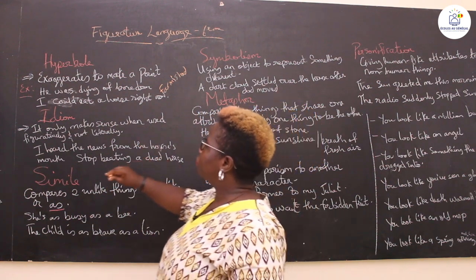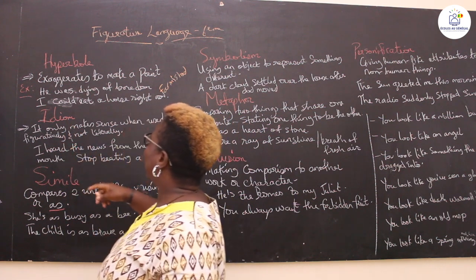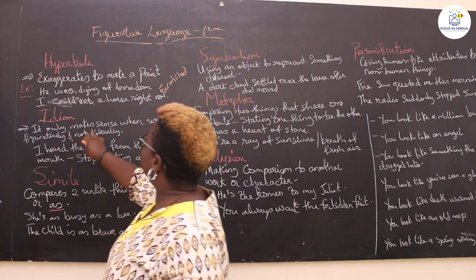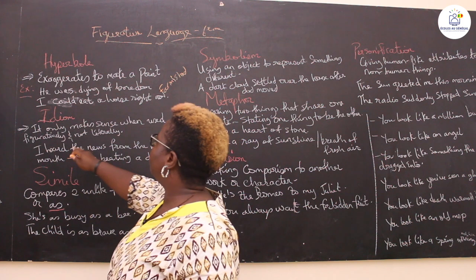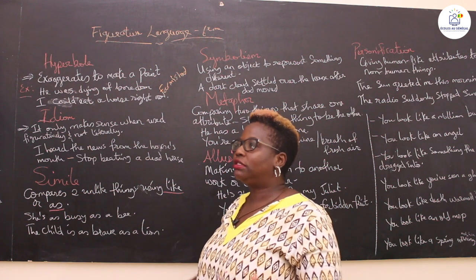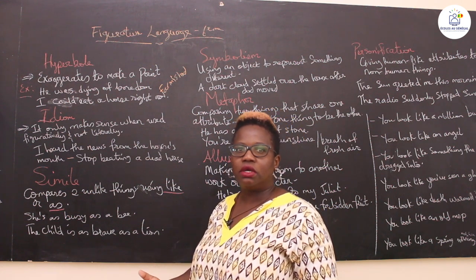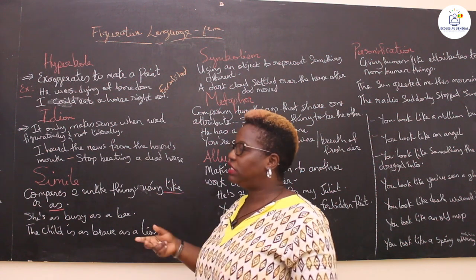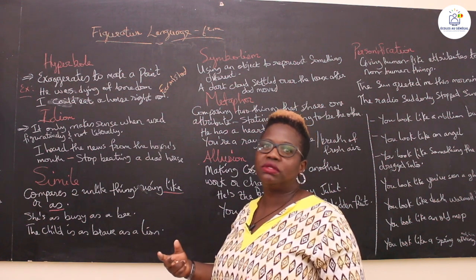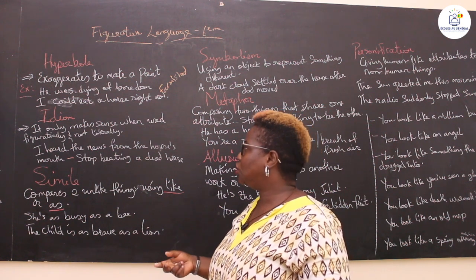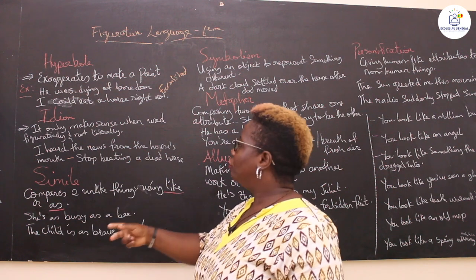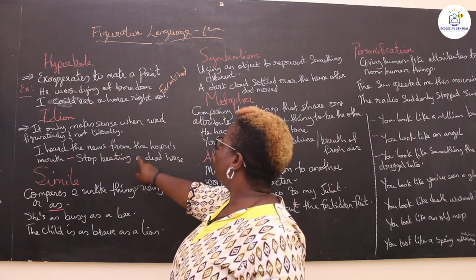And then what is an idiom? It's pronounced 'I-dom.' An idiom is something that only makes sense when used figuratively and not literally. It's like trying to say something in the form of a narration — it only makes sense figuratively, in the sense that it is used to describe or pass a message with ideas in it. It's not word for word. For example, 'I heard the news from the horse's mouth.'